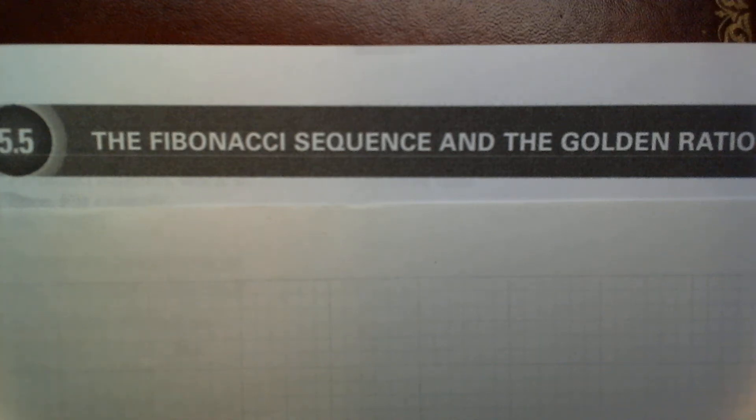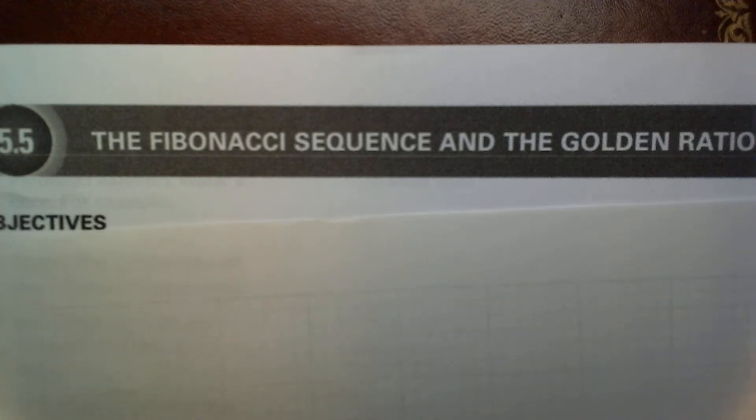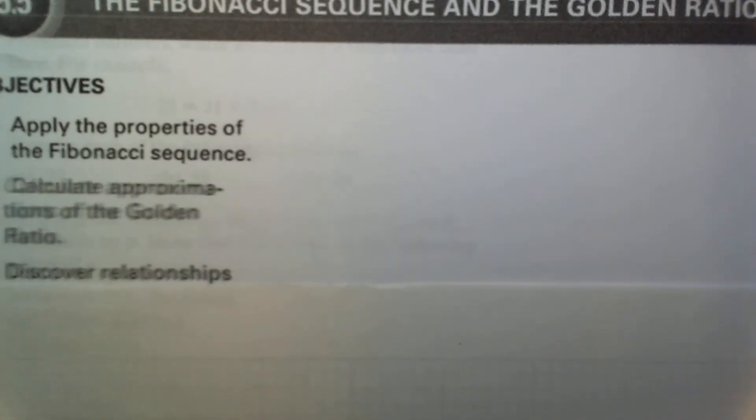Section 5.5 covers the famous Fibonacci sequence and the famous golden ratio. Here we have three objectives: number one is to apply the properties of the Fibonacci sequence that occurs very often in nature and other calculations, number two is to calculate the approximations of the golden ratio, and last, discover the relationships between the Fibonacci sequence and the golden ratio.